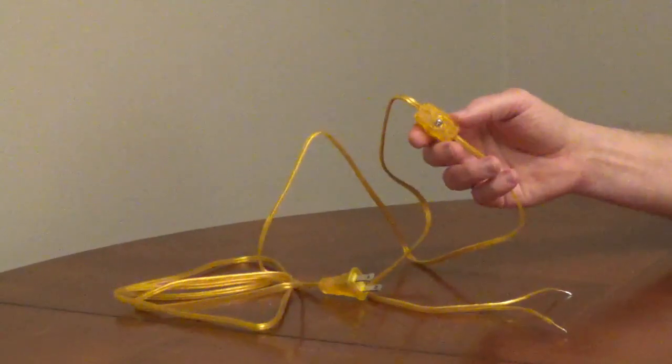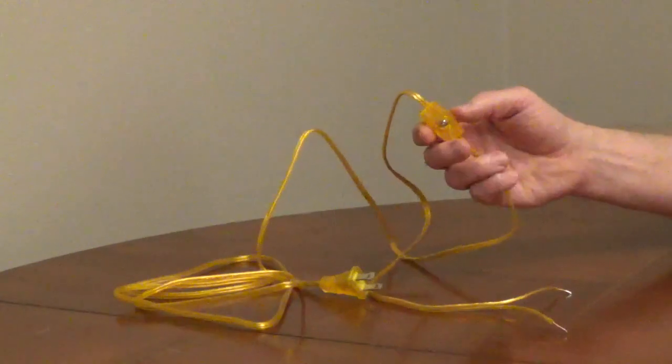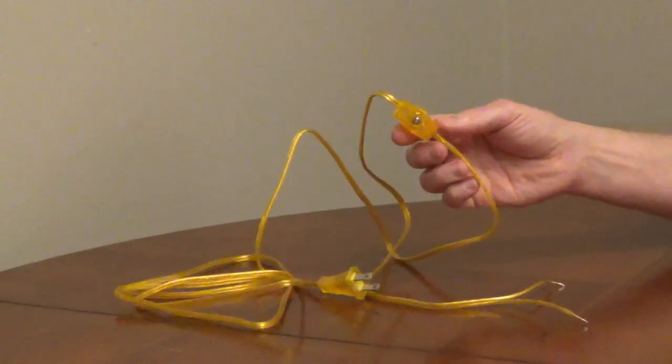To wire a lamp cord with an inline switch, you need to find the hot and neutral wire. The inline switch will be on the hot wire of the power cord.